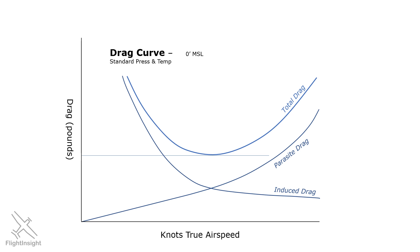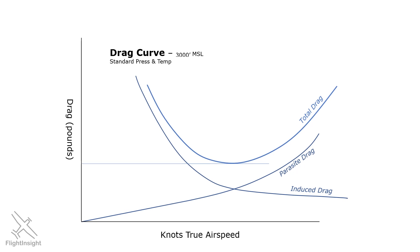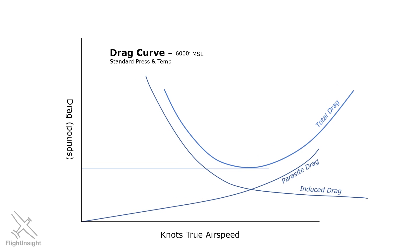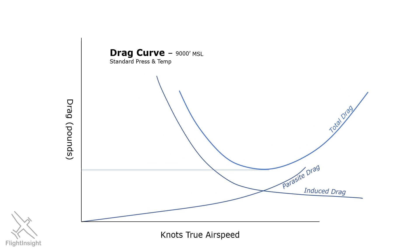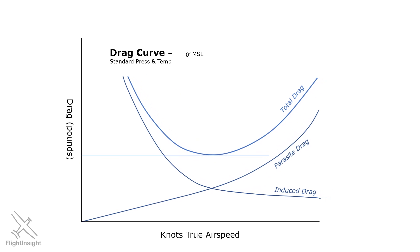Up at altitude where the air is thinner, drag is reduced. The aircraft can fly at the same true airspeed and encounter fewer air molecules and thus less drag. So we encounter more drag at sea level.